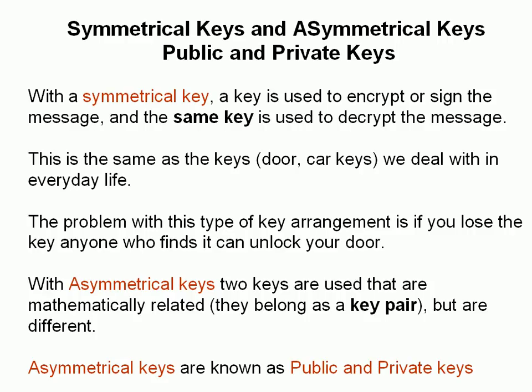There are two types of keys in use: the symmetrical key and the asymmetrical key. Asymmetrical keys are commonly known as public and private keys. With the symmetrical key, the same key is used to both encrypt and decrypt the message — the same as the keys in your door or car keys in everyday life. The key that locks the door is the same key that opens the door. The problem with this arrangement is if you lose the key, anyone who finds it can unlock the door.